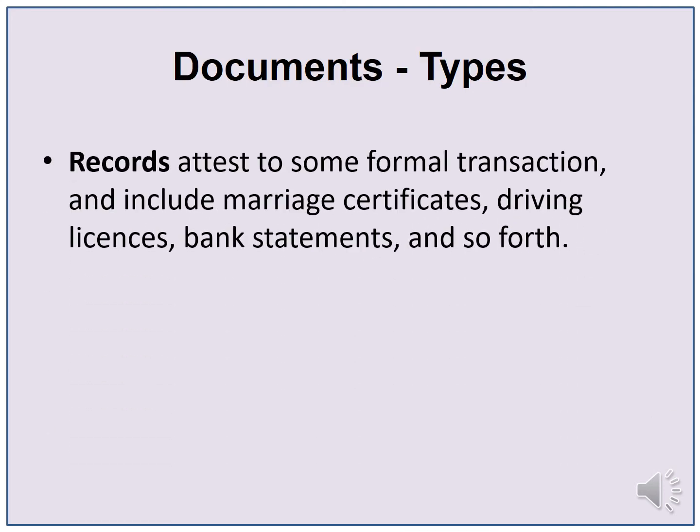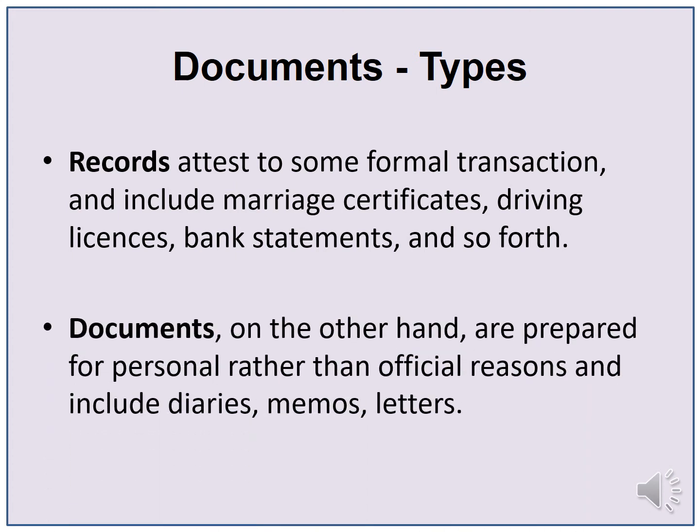There are two types of documents: records and documents. Records attest to some formal transaction and include marriage certificates, driving licenses, bank statements, official documents, and so forth. Documents, on the other hand, are prepared for personal rather than official reasons and include diaries, memos, letters, etc.